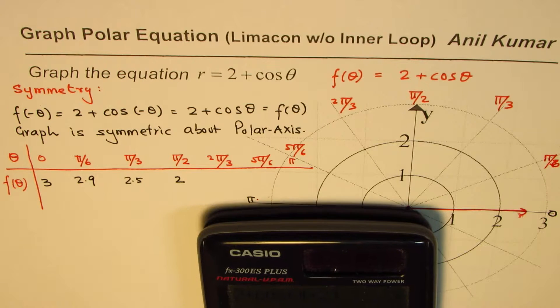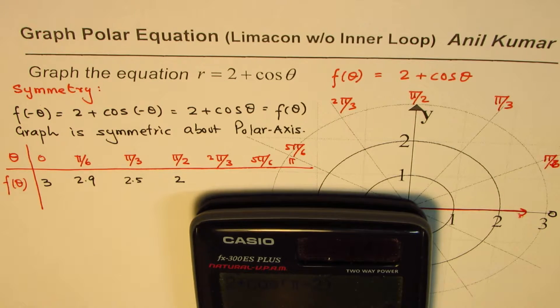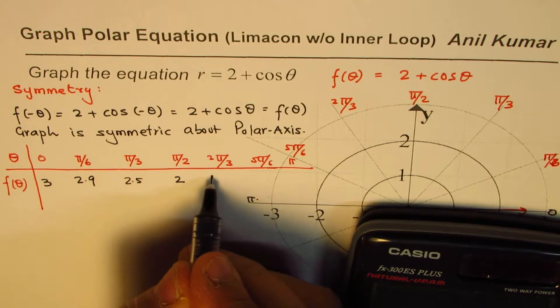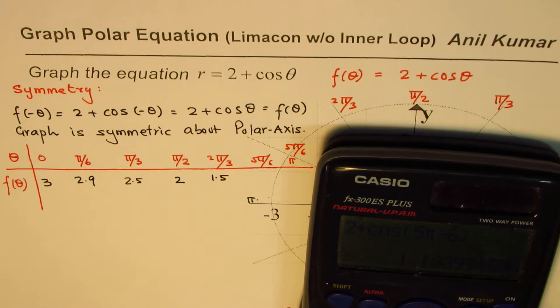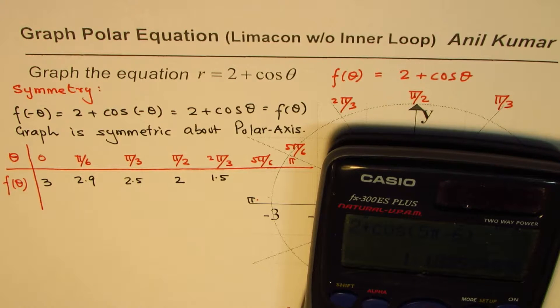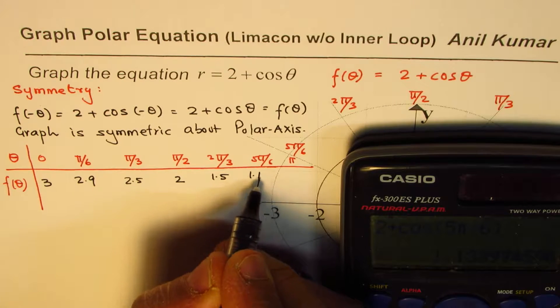And now we'll do 2π by 3. So we have 2π by 3, equals to in decimals 1.5. 5π by 6, so let's get back to the equation. It says 5π by 6, equals to in decimals, let me redo this. I'm not very sure of this calculation, so we'll redo it. 5π by 6, equals to in decimals 1.13.